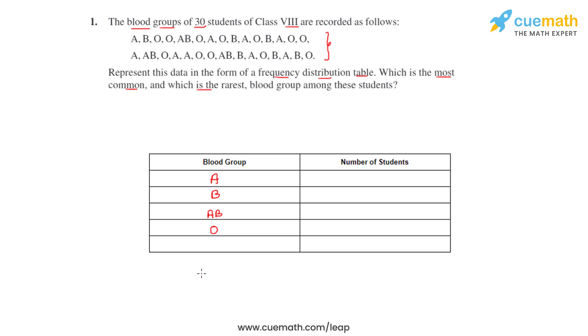So we will be first finding the number of students who have got blood group A. The students with blood group A have been highlighted and there are 9 students that we can see.